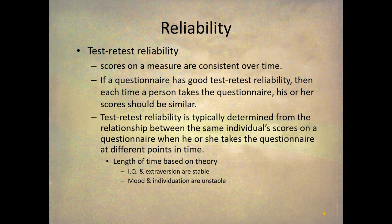Test-retest reliability is typically determined from the relationship between the same individual scores on a questionnaire that they take when they take the questionnaire at different times. The length of time between the administrations is based on the theory behind the construct. For example, extroversion and IQ, these constructs are considered to be very stable. So you could wait a month or two or even a year between administrations. And a reliable test would give the same value for IQ. However, other constructs such as mood and individuation are very, very unstable. And so you would have to give a retest-retest reliability test within minutes if you wanted to use this method to do a reliability study on mood or individuation.